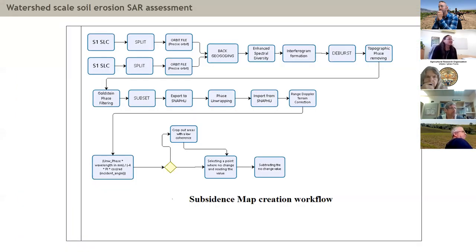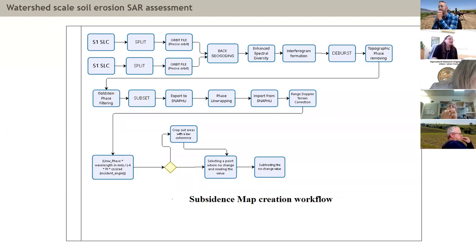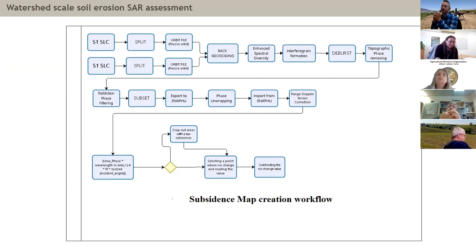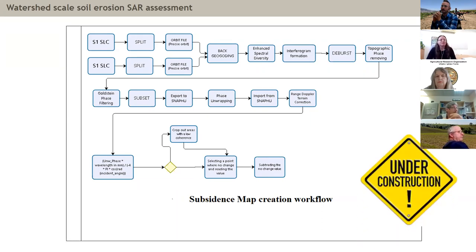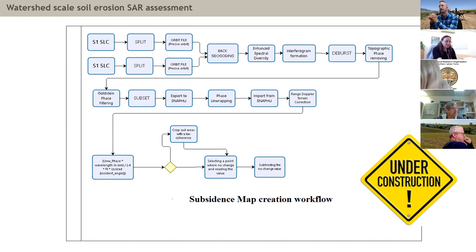The next step uses SAR satellite data, which is usually very accurate in evaluating soil moisture and soil roughness. Based on a model evaluating soil moisture and roughness, we will be able to evaluate the overall level of erosion at the watershed scale. This is work in progress — I believe that in the next seminar I will be able to show results of this work developing a model for soil erosion based on LIDAR, SAR, and these very interesting systems.